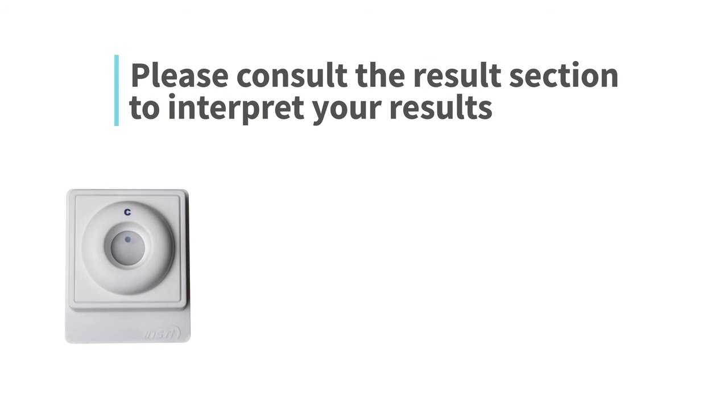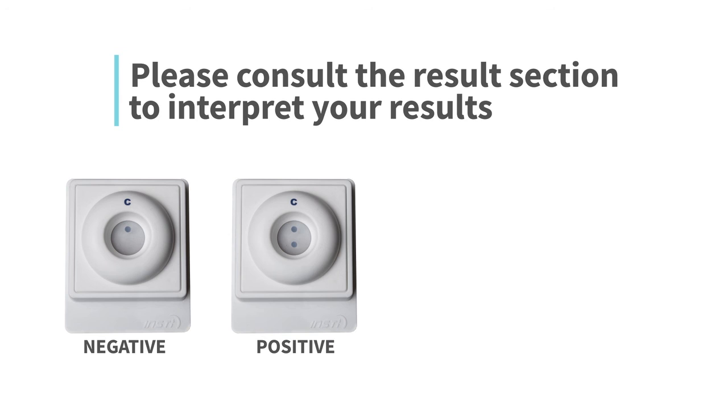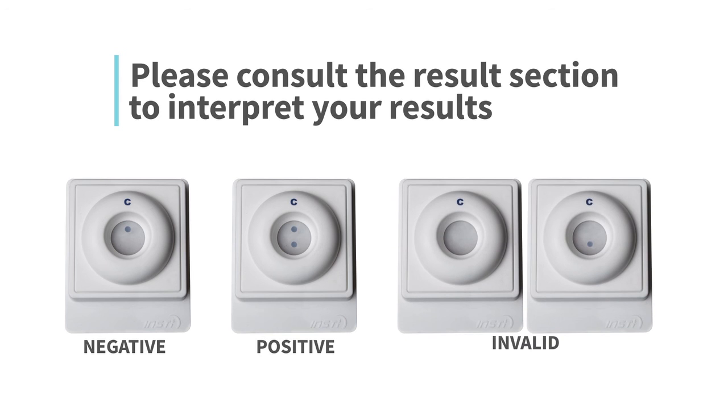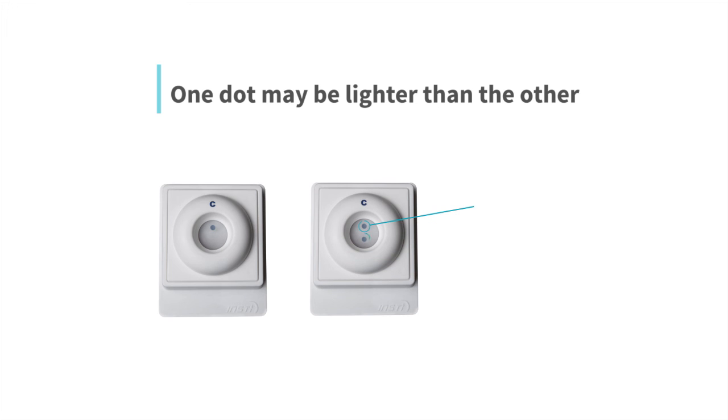If your result is negative, test again in 3 months. If your result is positive, go to a clinic to see a doctor. If your result is invalid, your test did not work. Go to a clinic to see a doctor. When reading your results, one dot may be lighter than the other.